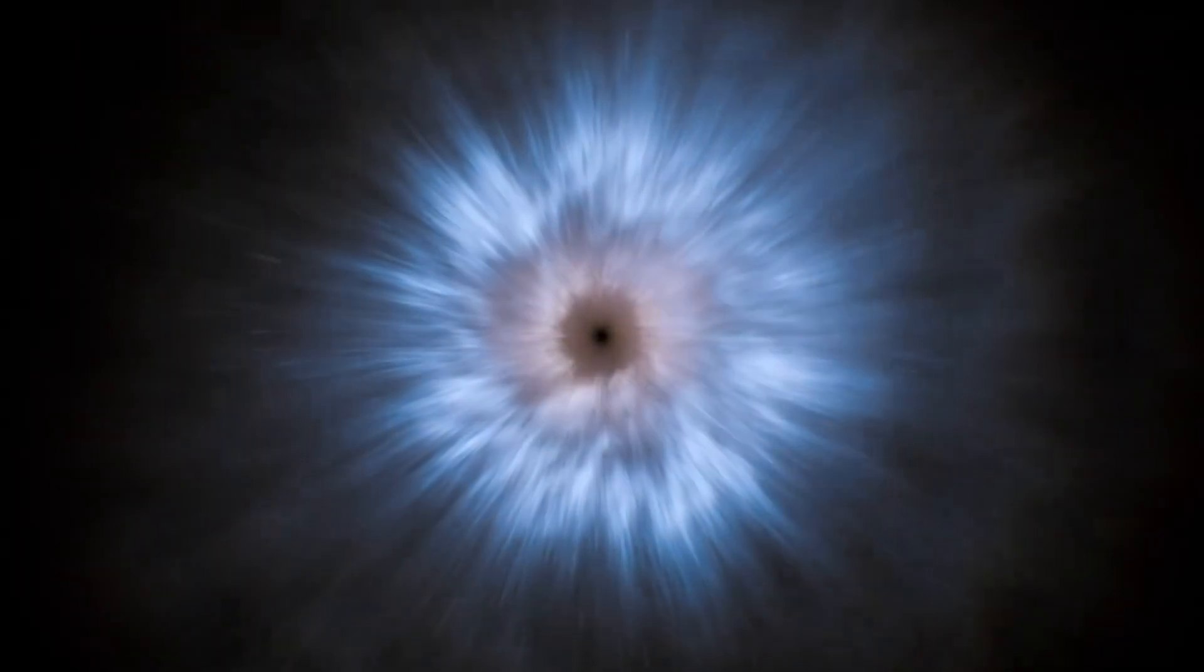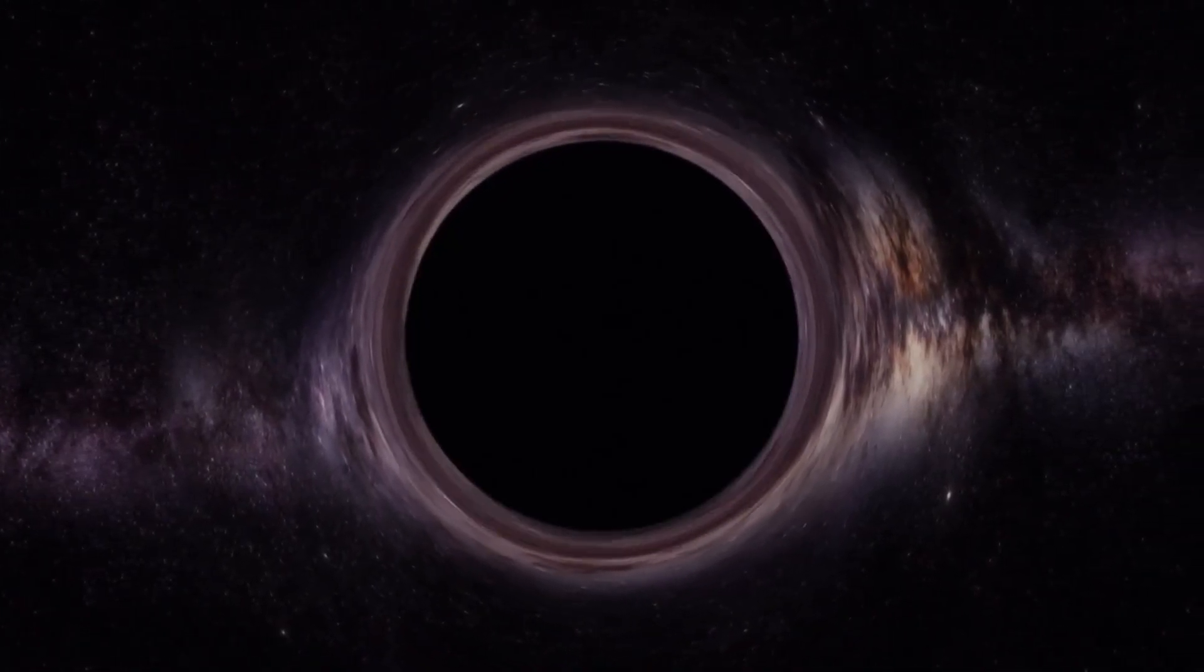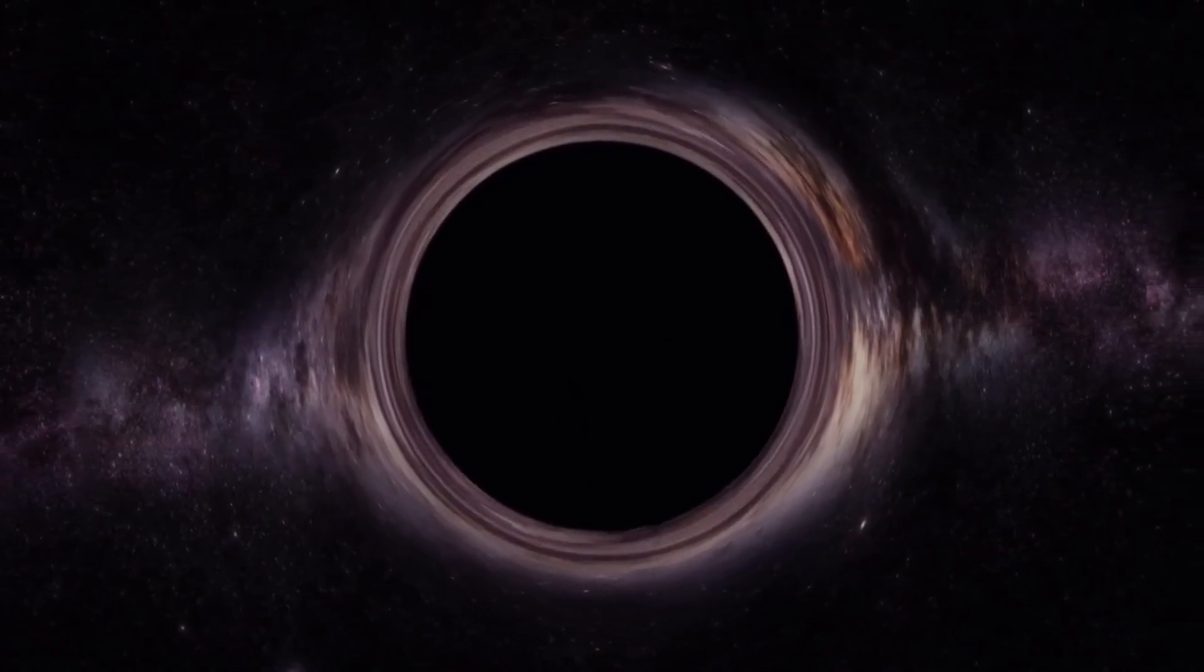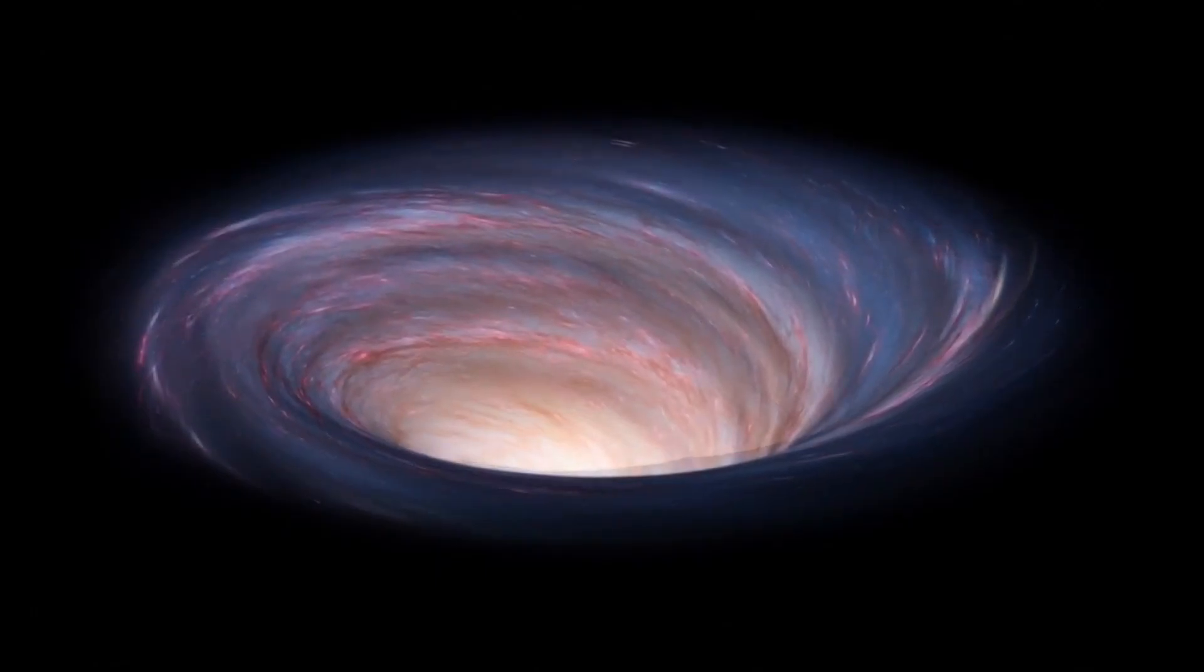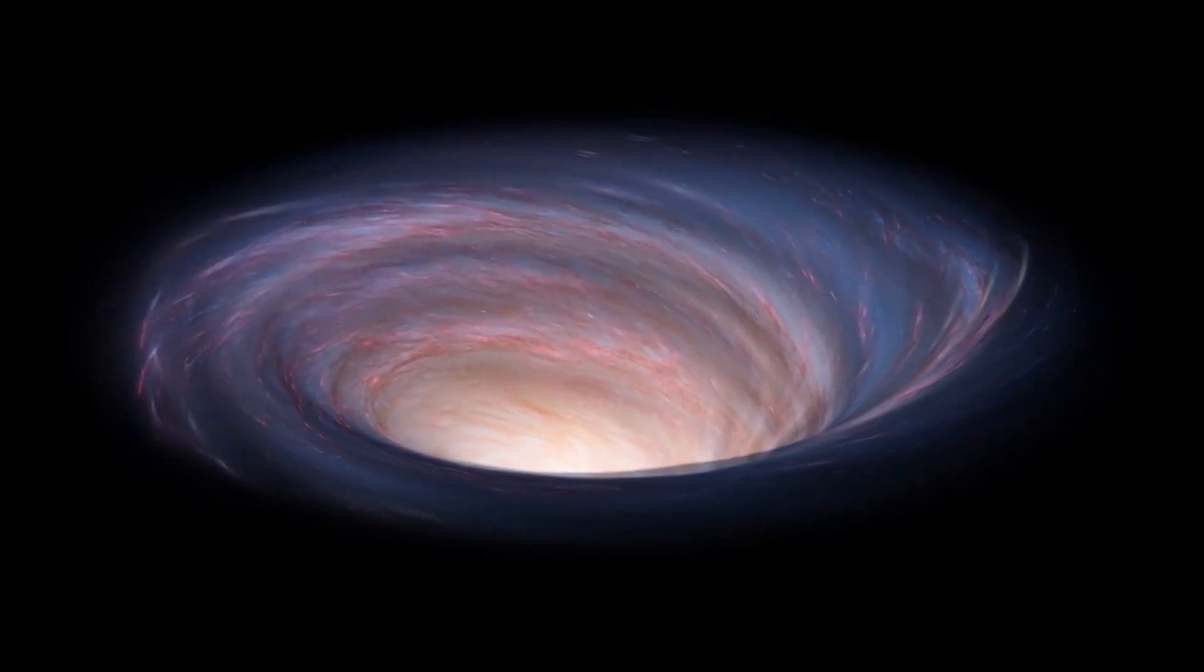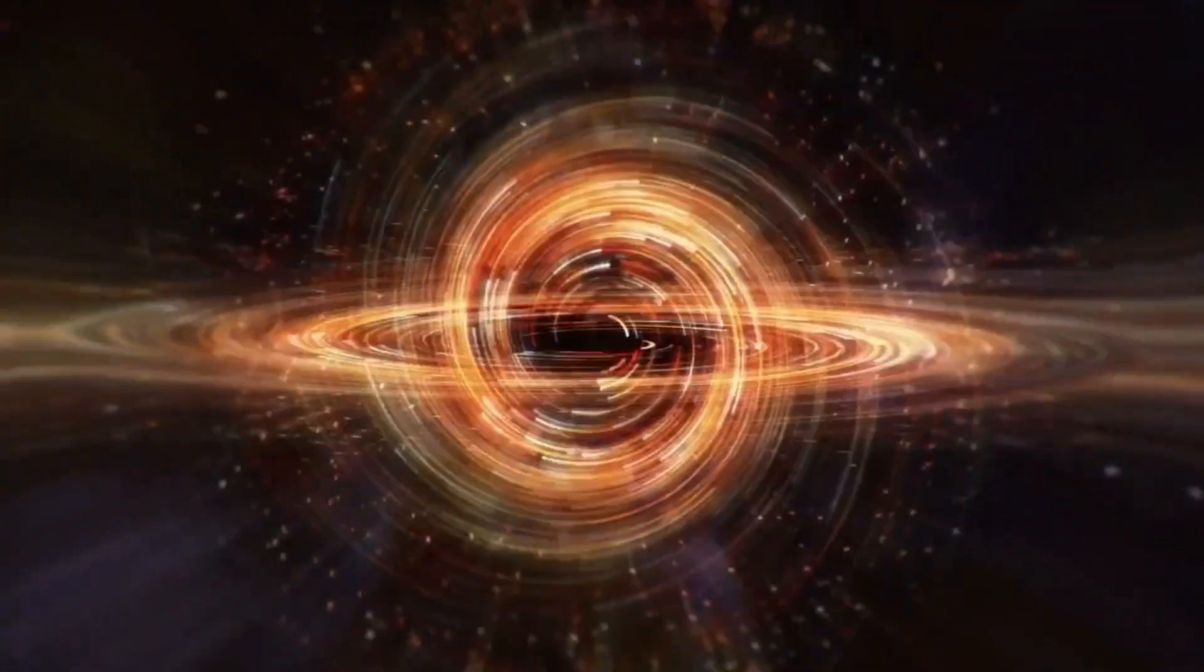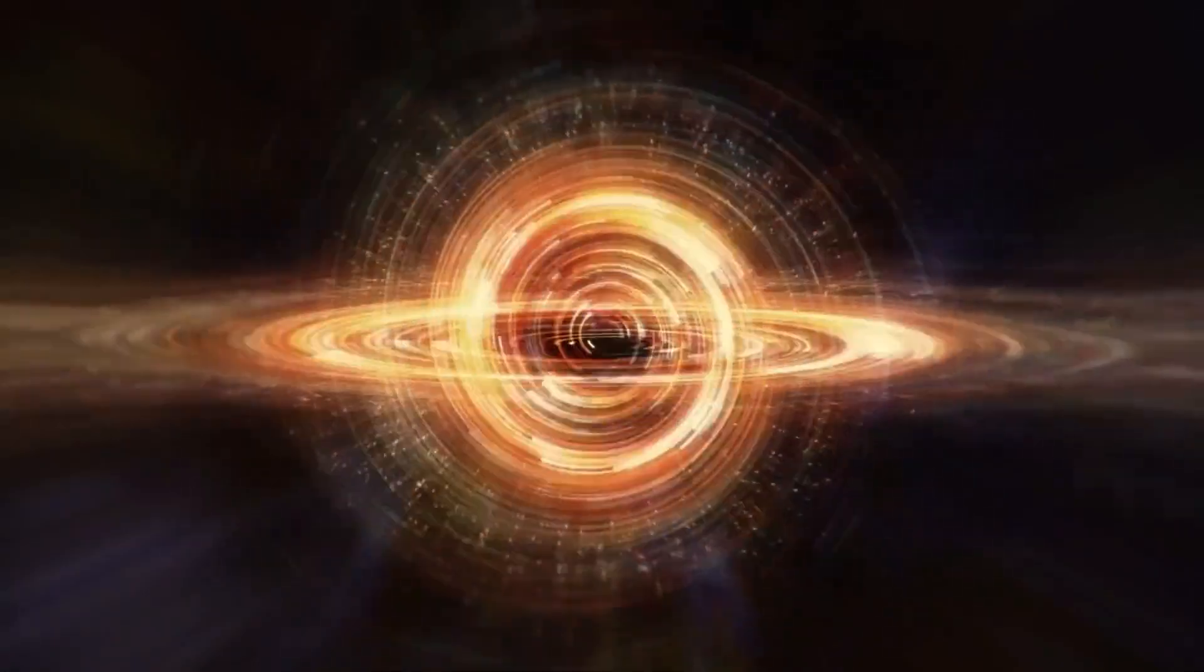Identifying black holes is no simple task since they emit no light. However, scientists have found ways to interpret their presence by observing their effects on neighboring matter. For example, if a black hole passes through a cloud of interstellar matter, it will pull matter towards it in a process called accretion. Additionally, when a normal star gets too close to a black hole, it can be destroyed, emitting x-rays as it does so.